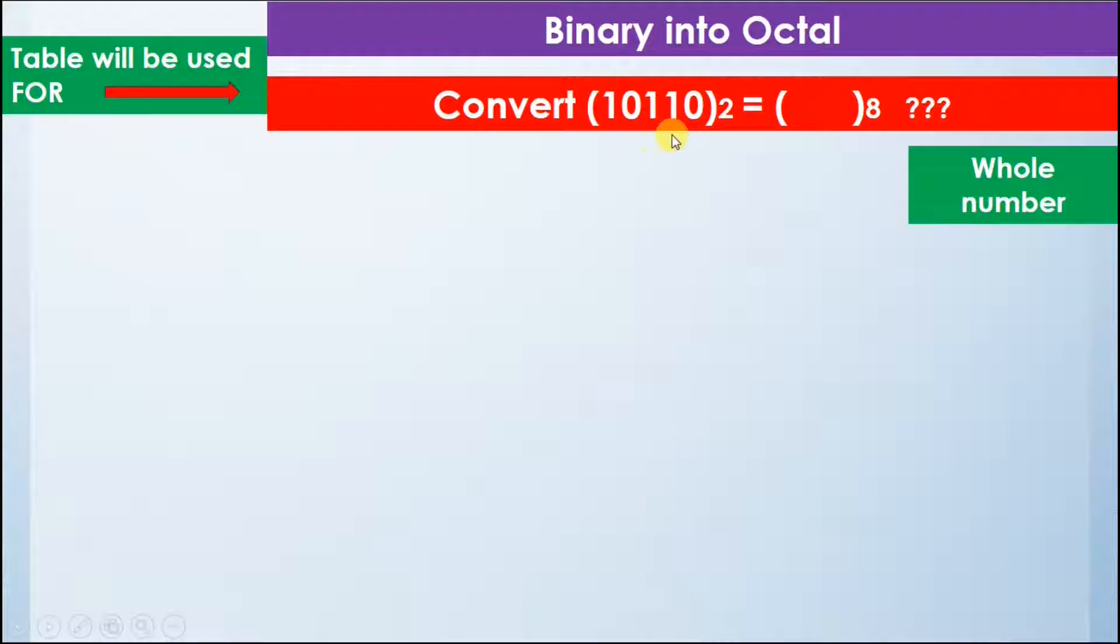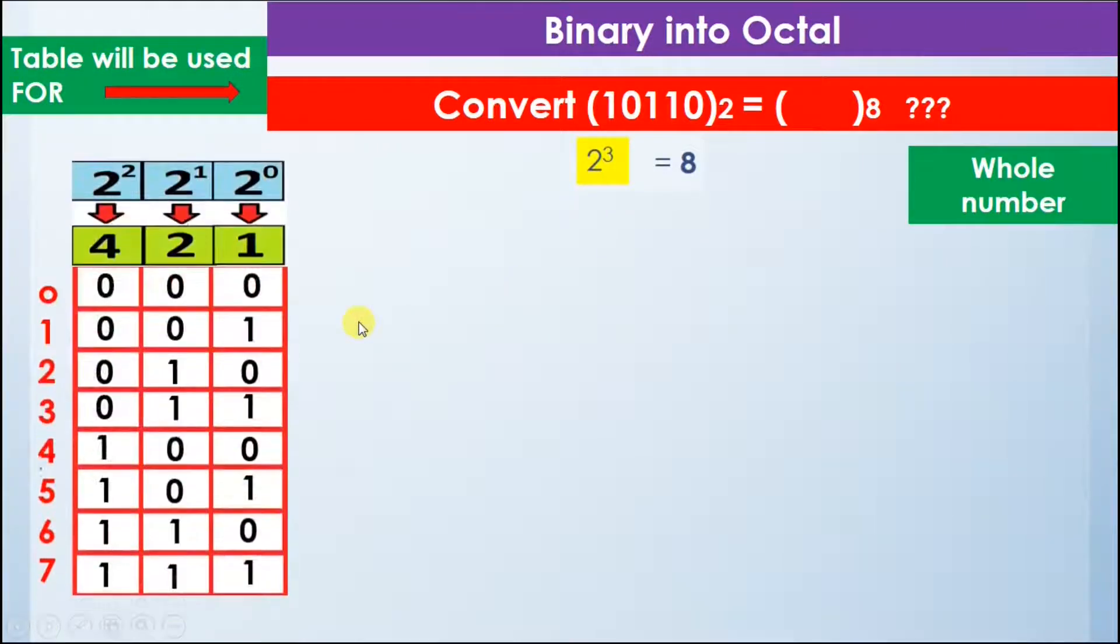We are given the number 10110 in binary and we have to convert it into octal base. Remember that 2 raised to power 3 is equal to 8, so now we add the table that we created before.